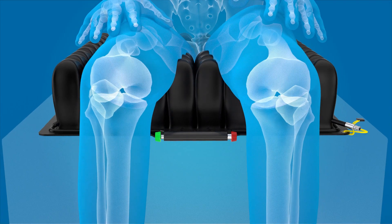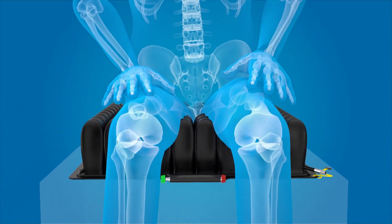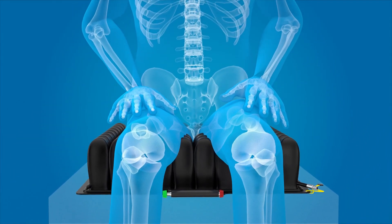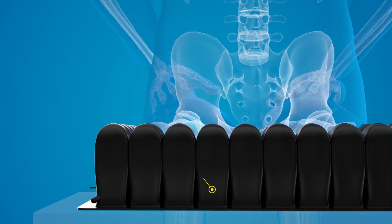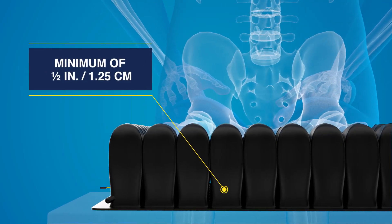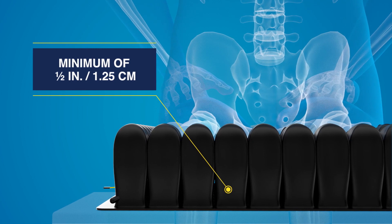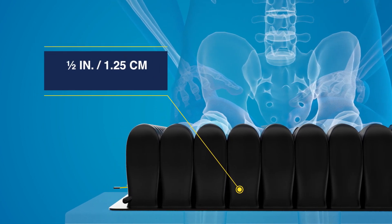Close the isoflow control by pressing the red knob in. Perform a hand check to ensure there is a minimum of one-half inch of air between the client's ischial tuberosities and the seat surface.